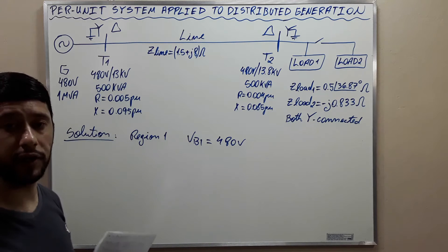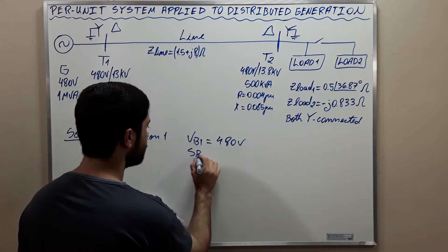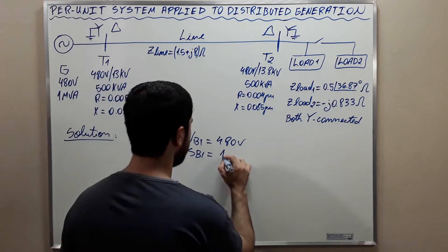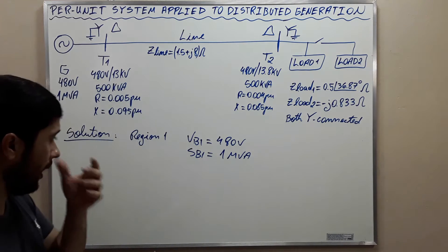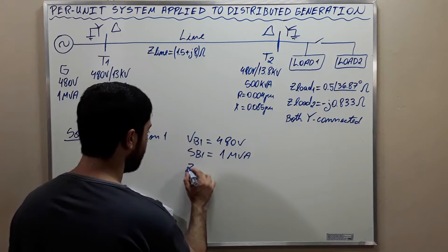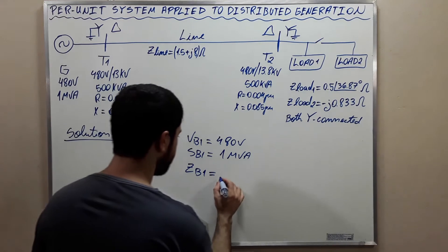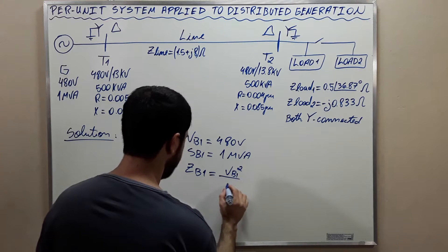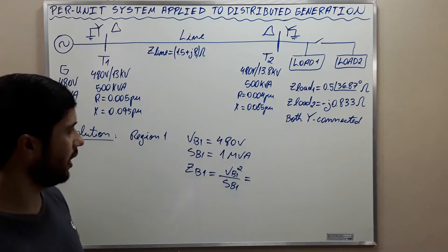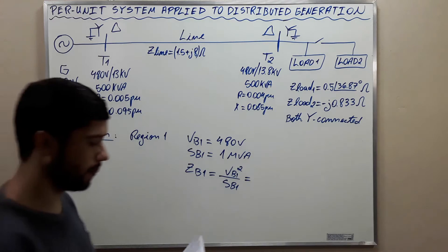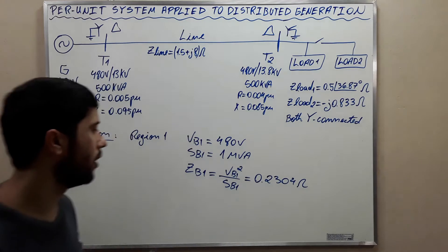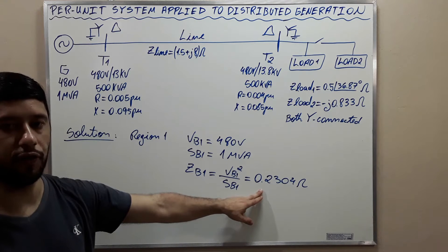We are going to use base values: the voltage VB1 will be 480 volts. The base value for the apparent power of region 1 is 1 MVA. And with these values, we can calculate the base value of the impedance: ZB1 equals VB1 squared divided by SB1, and we find this base impedance value for region 1.